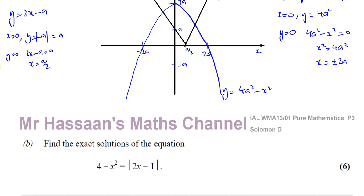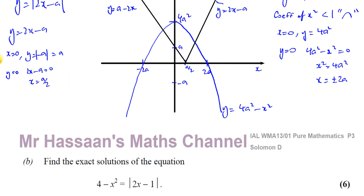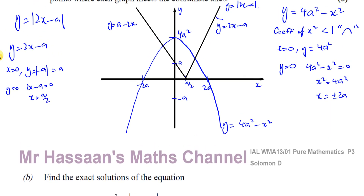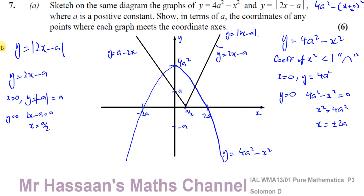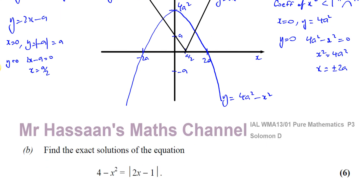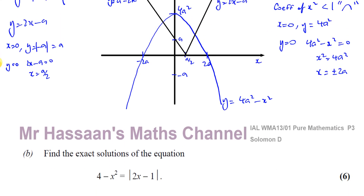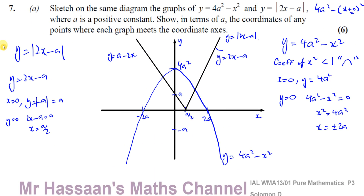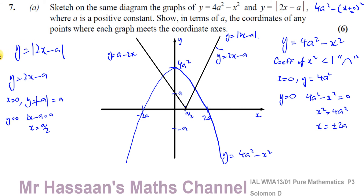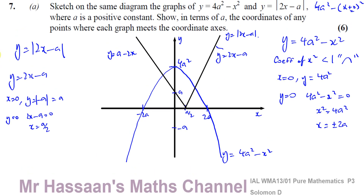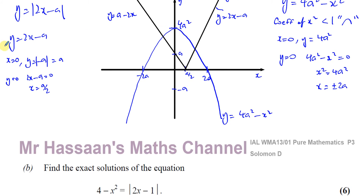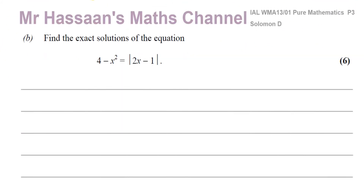Now for part B: find the exact solutions of 4 minus x squared equals the modulus of 2x minus 1. We can use the same sketch, because here a equals 1. So we have y equals 4 minus x squared and y equals the modulus of 2x minus 1. Making a quick sketch: the parabola cuts at plus 2 and minus 2 on the x-axis and at 4 on the y-axis; the modulus function has vertex at x equals a half and y-intercept at 1.